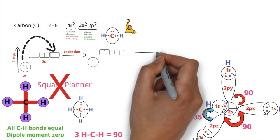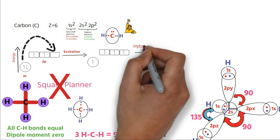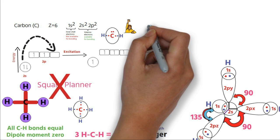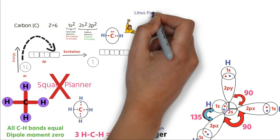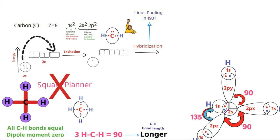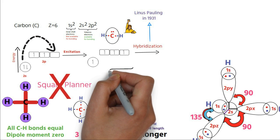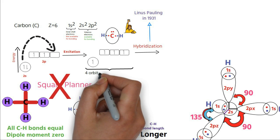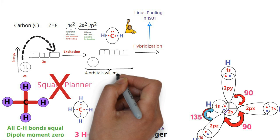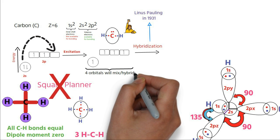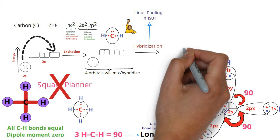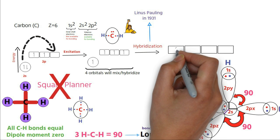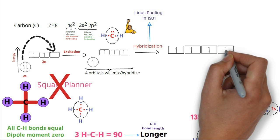This equivalence of bonds in methane was explained with the help of hybridization of orbitals, a concept first proposed by Linus Pauling in 1931. Pauling suggested that before bond formation, whenever appropriate, two or more than two different orbitals of comparable energies, mix or hybridize to give same number of equivalent orbitals having same energies and shapes, called as hybrid orbitals.